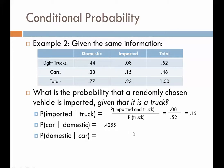The probability that it would be a domestic given we already know it's a car uses the same intersection — domestic cars — but now we divide by the probability of cars, which is 0.48. That gives us 68.75%.